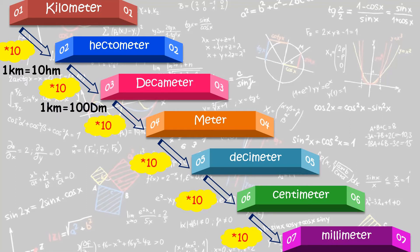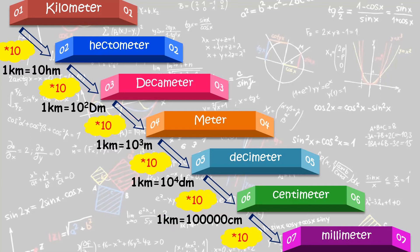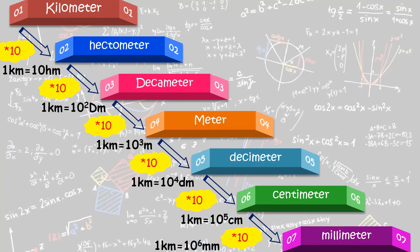One kilometer is equal to 100 decameters, that is 10 raised to 2 decameters. Next, one kilometer is equal to 10 raised to 3 meters, one kilometer is equal to 10 raised to 4 decimeters, one kilometer is equal to 10 raised to 5 centimeters, and one kilometer is equal to 10 raised to 6 millimeters.